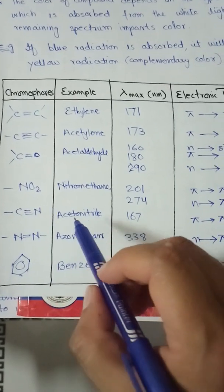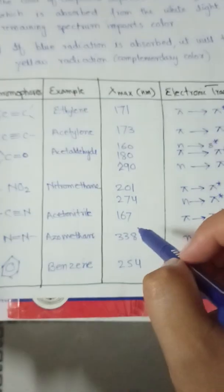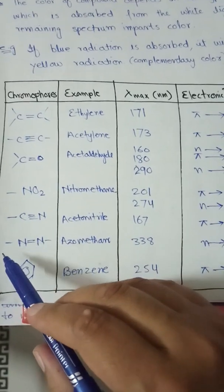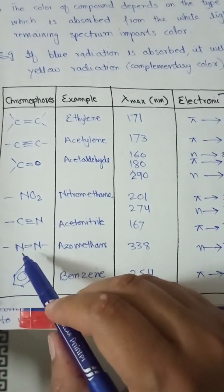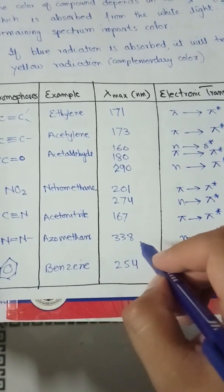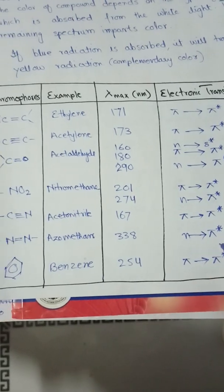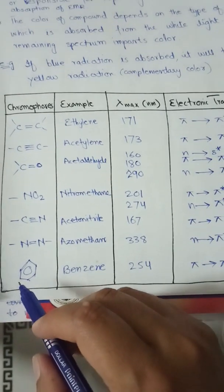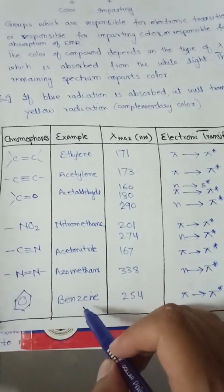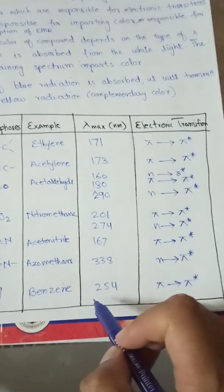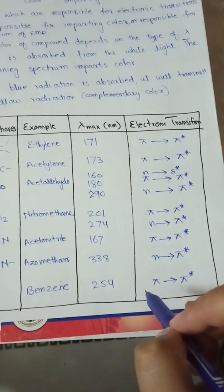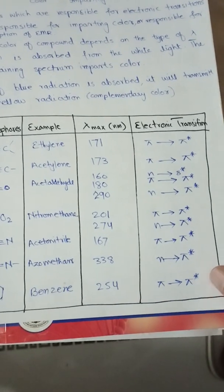Nitrile group — example is acetonitrile, lambda max 167 nm, pi to pi star transition. Azo group — azomethane, lambda max 338 nm, transition is n to pi star. Benzene ring — example is benzene, the aromatic compound, lambda max 254 nm, electronic transition is pi to pi star.